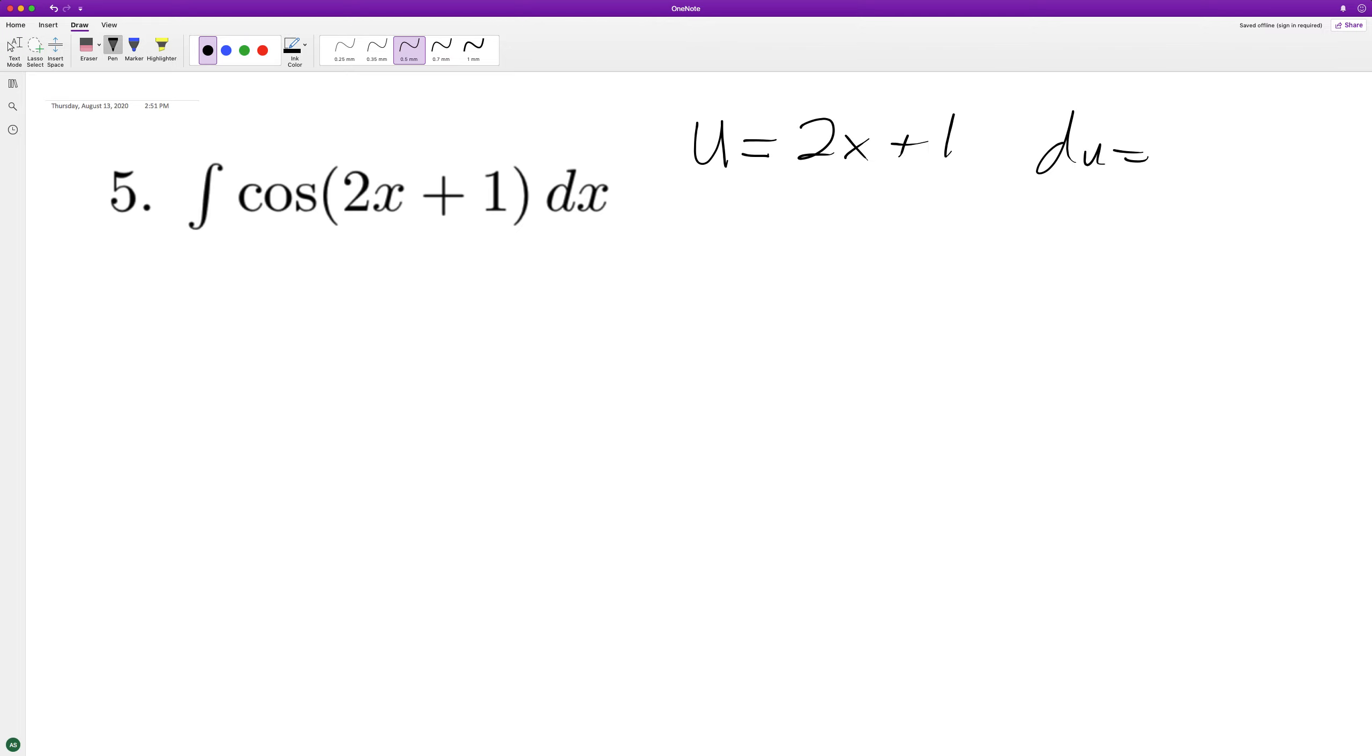du, the derivative of u, is going to be equal to 2. So to get du equal to dx, if you look here, there's just the cosine, so we need to multiply du by 1/2 because we have 2 for du.